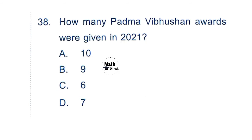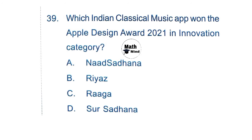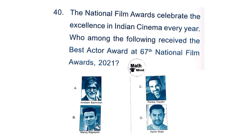Question 38: How many Padma Vibhushan awards were given in 2021? Option D is correct: seven. Question 39: Which Indian classical music app won the Apple Design Award 2021 in the Innovation category? Option A is correct: Nath Sadhana. Question 40: Who received the Best Actor award at the 67th National Film Award 2021? Option B is correct: Pankaj Tripathi.